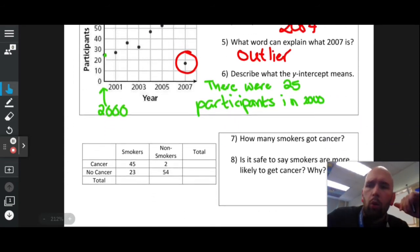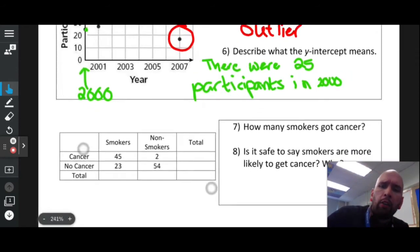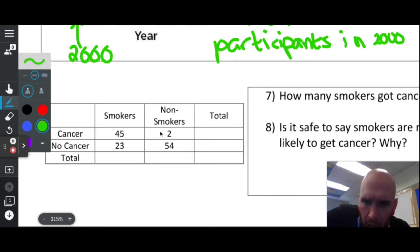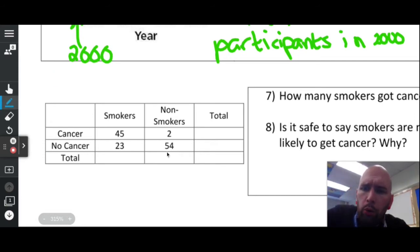Now we have a two-way table that's not complete. The numbers inside are called the joint frequencies, and the totals are the marginal frequencies. The way we find them is we add them. So we add these two columns: 45 plus 23 is 68. We add these two columns: 2 plus 54 is 56.